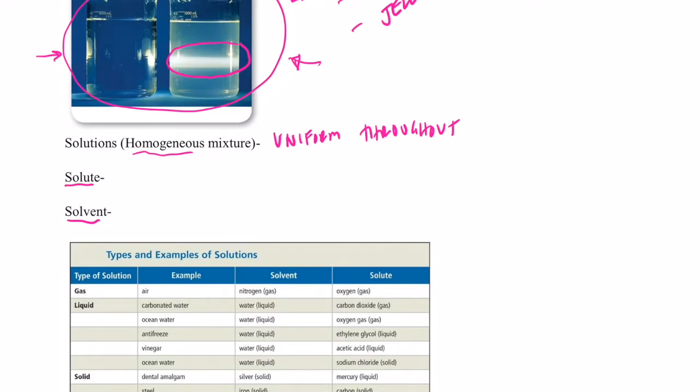Essentially, the solute is the thing that gets dissolved in the solution. So if I had salt in water, my salt would be the thing that gets dissolved by the water. So my salt would be my solute. The solvent is the substance that dissolves the solute. So in my salt in water example, water would be my solvent because it dissolves the salt, my solute.